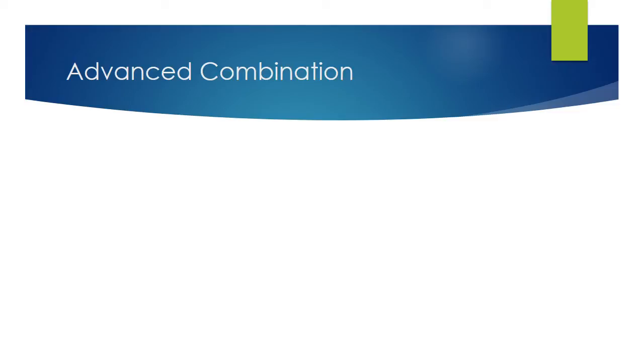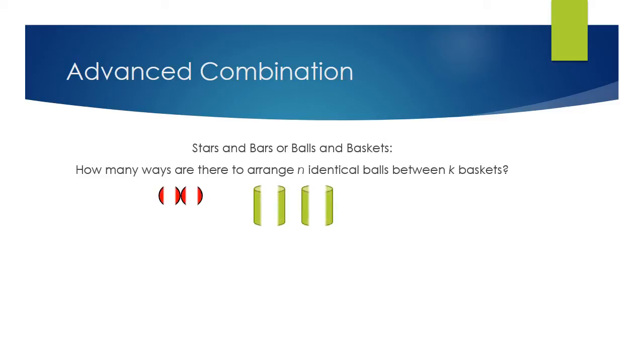So now we move on into the advanced combination. And the traditional type of advanced questions are regarding stars and bars or balls and baskets. Those are usually the ones that they start out with. So the question usually goes like this, how many ways are there to arrange n identical balls between k baskets? So what do you think for arranging two balls, two identical balls into two baskets? So the formula for that just boils down to a single formula, which is n plus k minus one over n.